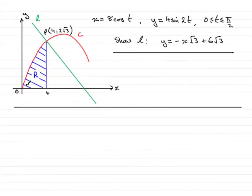Now in this question we're given the equation of the curve C, it's up here, and asked to find the equation of the normal to the curve L at the point P. We've got to show that the equation of line L is y equals minus x root 3 plus 6 root 3.